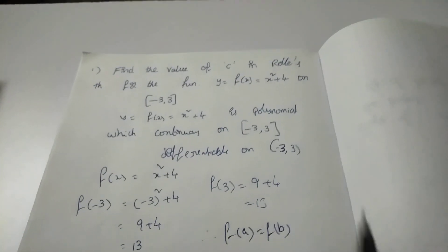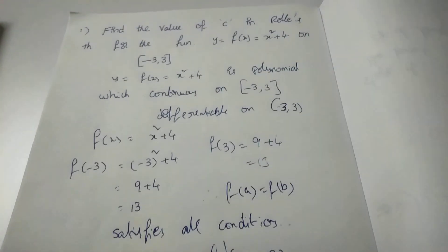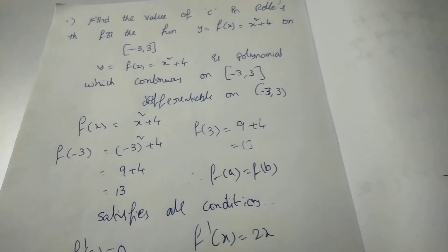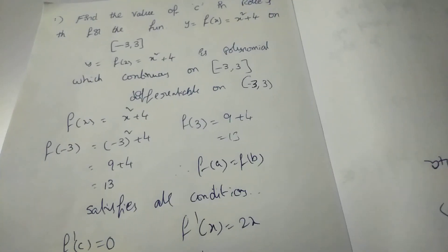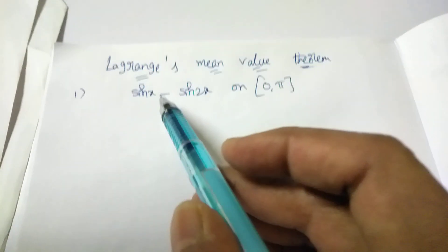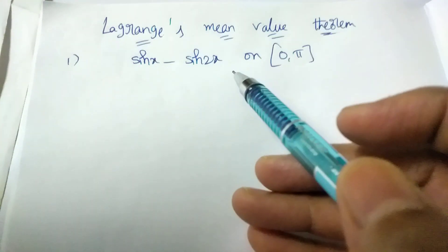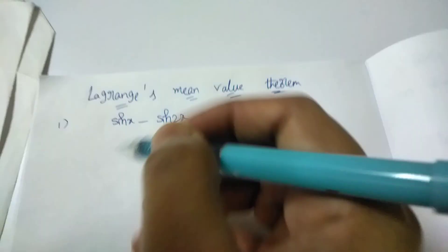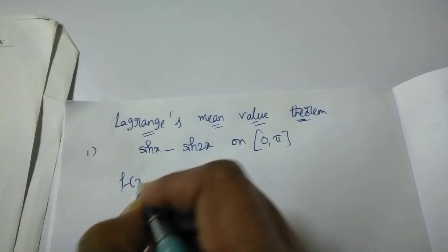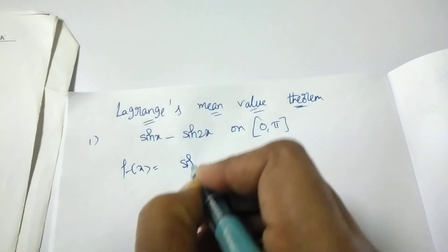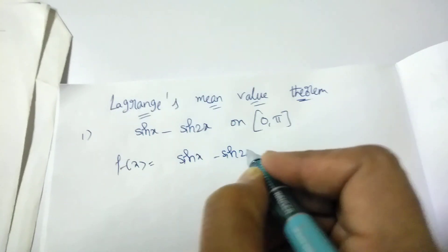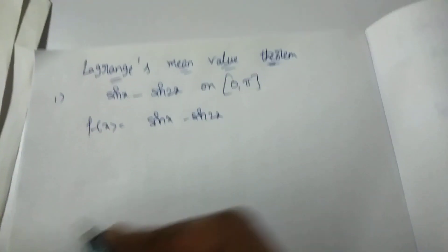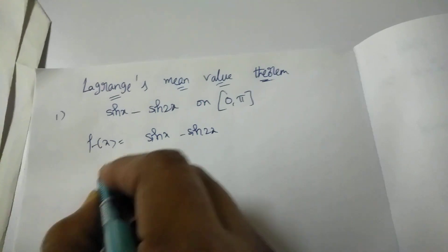This is the Rolle's Theorem example — only two marks but you must write all these steps. Now for Lagrange's theorem example: the function f(x) = sin x − sin 2x is given. Write f(x) = sin x − sin 2x first.